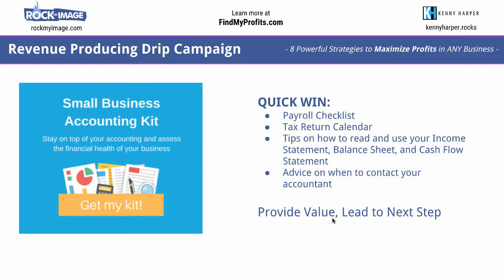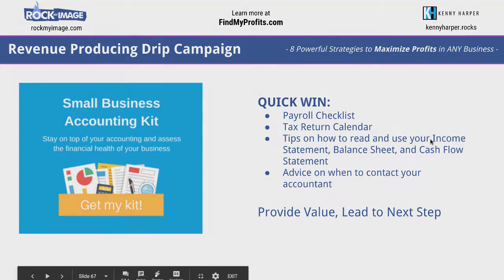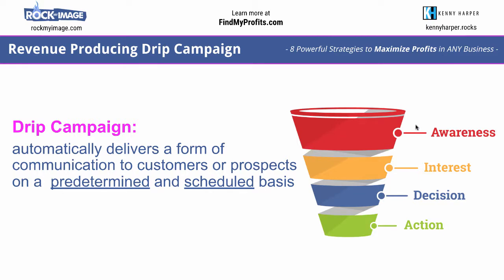When you have a drip campaign, it's really about thinking: how can you get people to go through the different parts of the sales funnel? Whether it's building awareness first, generating interest in your product or service, getting someone to make a decision, and then taking action. This can be set up automatically through text, email, or other forms of media, automatically delivering communication to customers or prospects on a predetermined, scheduled basis — overcoming objections, sharing testimonials, and sharing the benefits of your product or service.